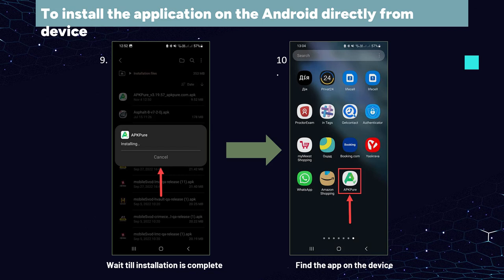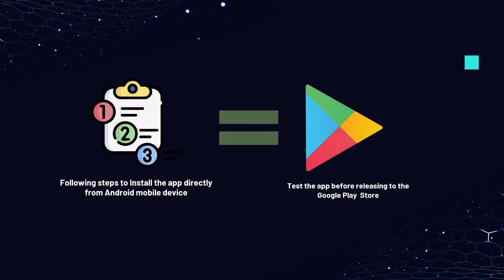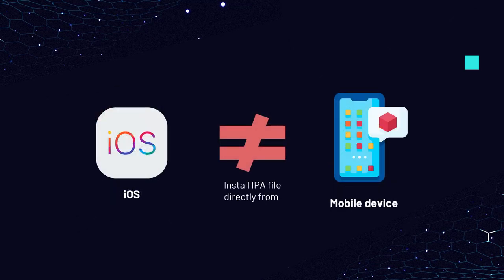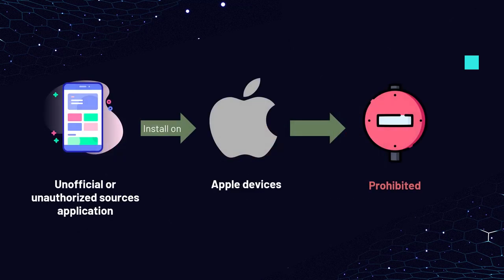By following these steps to install the app directly from an Android mobile device, you can easily access the application builds and test them before releasing to the Google Play Store. But for iOS devices, these steps don't work and the tester is unable to open the file manager with the IPA file and proceed with direct installation. The reason is that the App Store is the sole and exclusive source for iOS apps, and Apple does not allow iOS users to install apps from unofficial or unauthorized sources.